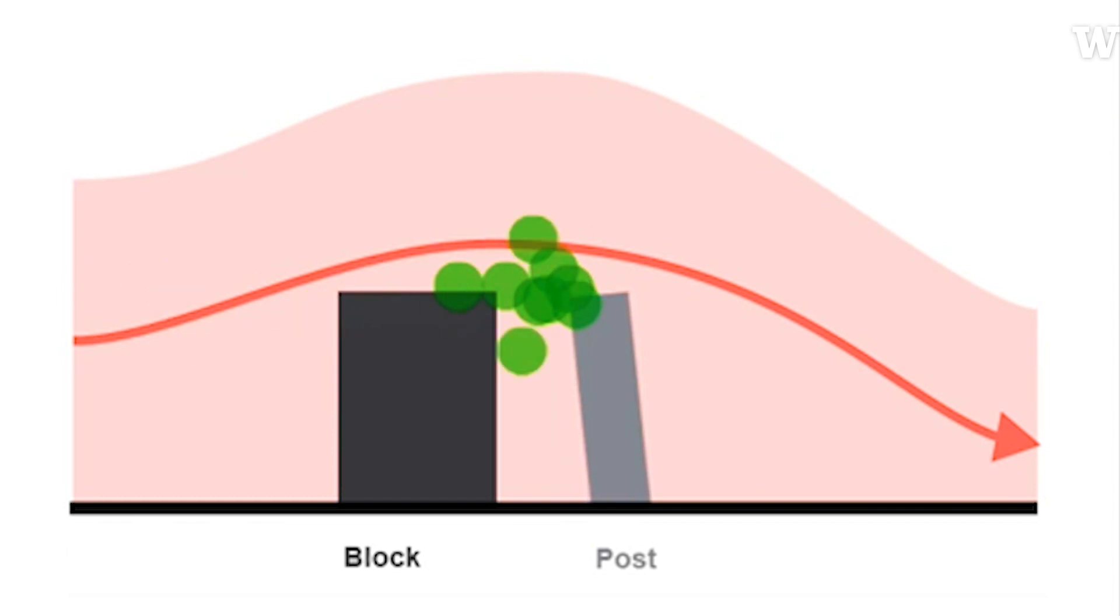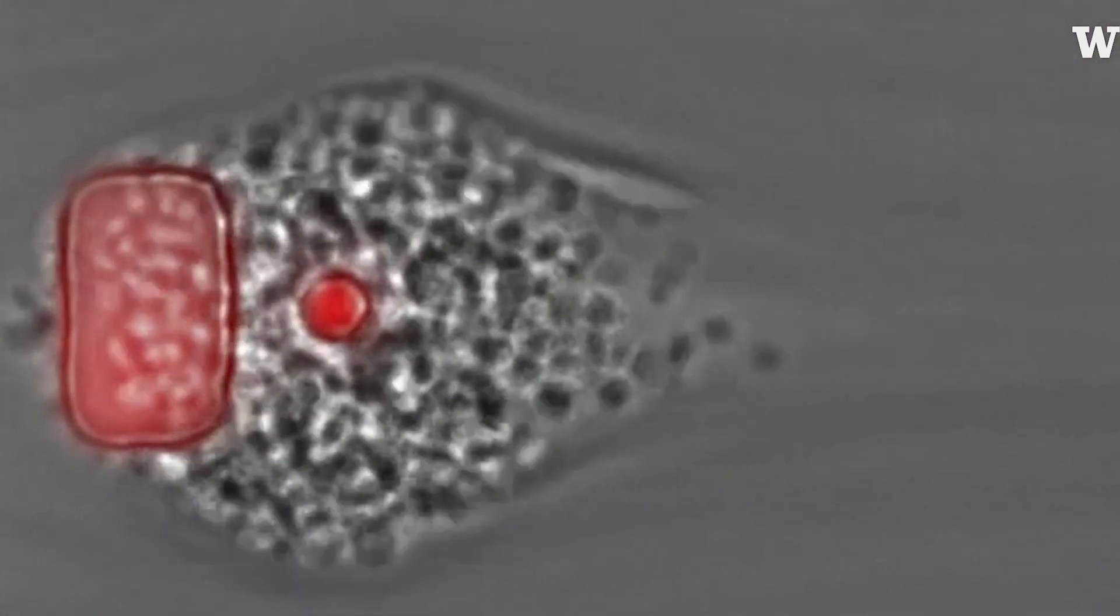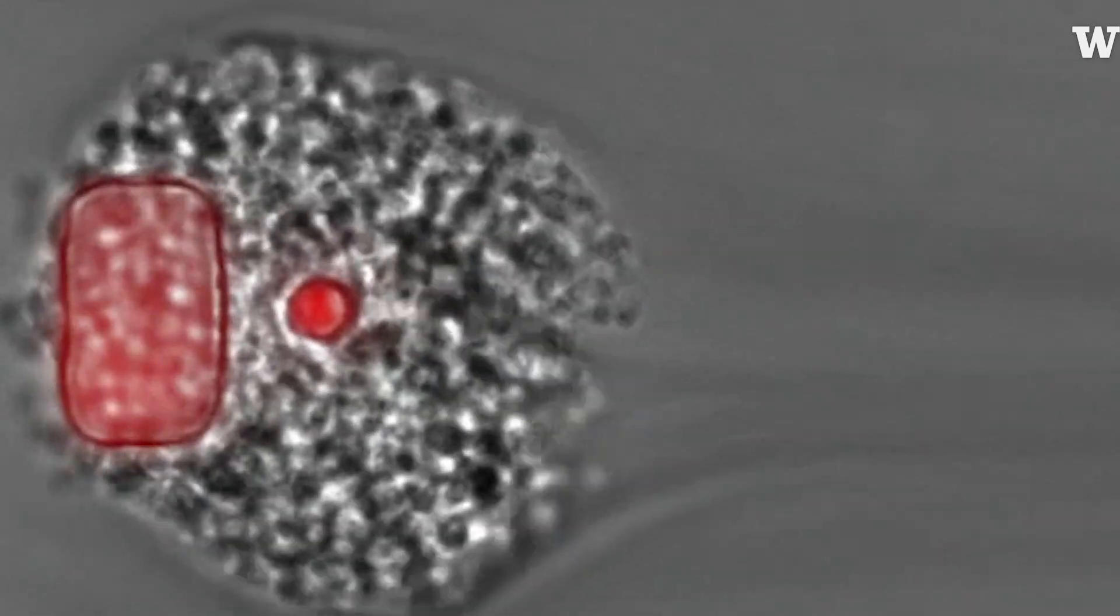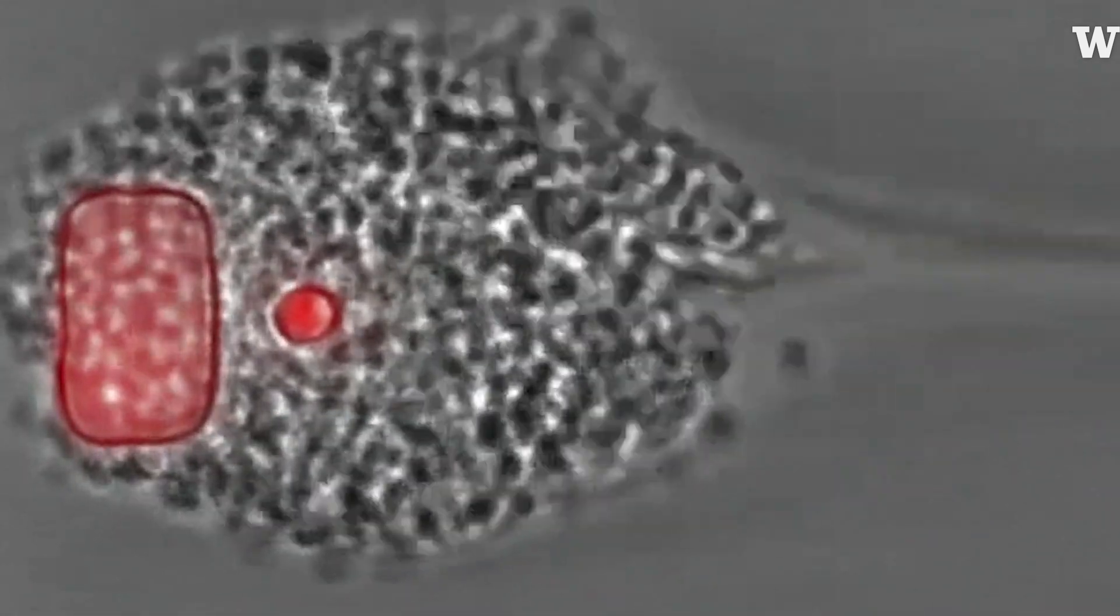So we could tell whether there's healthy platelets that are strong and able to bend the post or if you've got inhibited platelets. Maybe you took aspirin that day. Now the platelets are not going to generate as much force and you're not going to see that post bend towards the block.